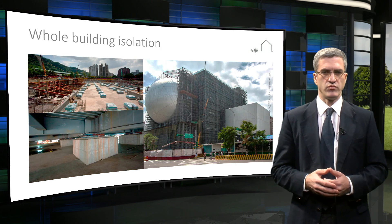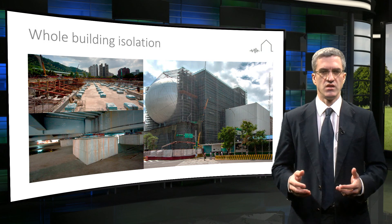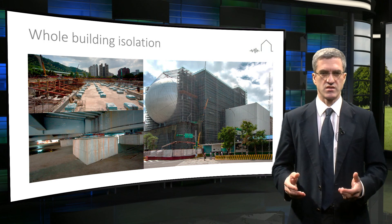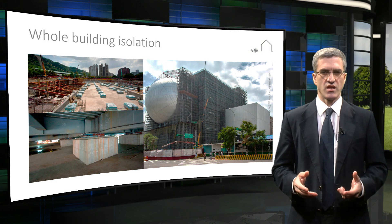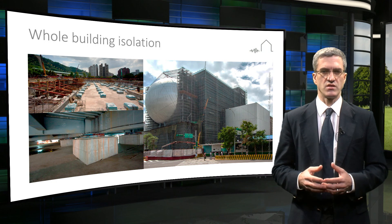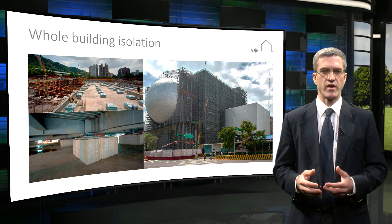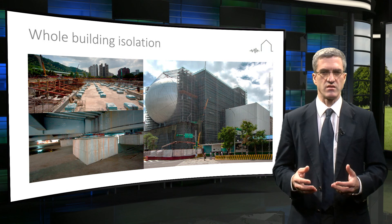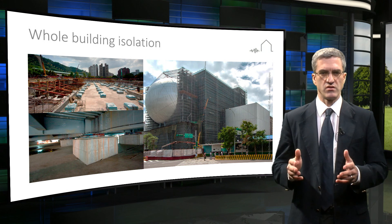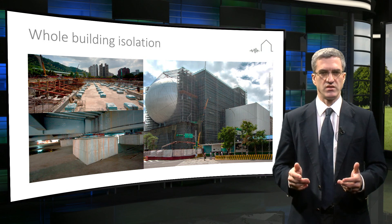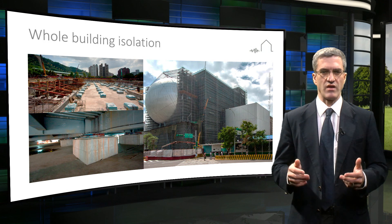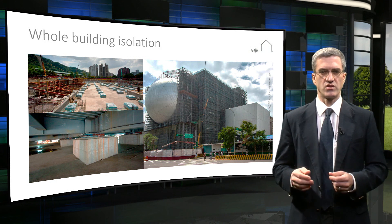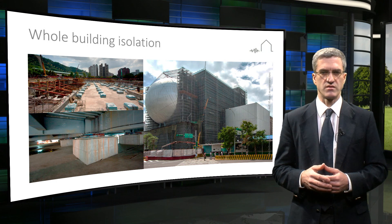An example of a whole building isolation is the Taipei Performing Arts Centre. In this case, base isolation reduced the expected seismic forces by about 60%, resulting in lower material consumption and simpler detailing. The building is also expected to have less damage after an earthquake compared to conventional construction methods.